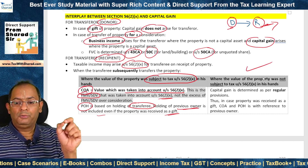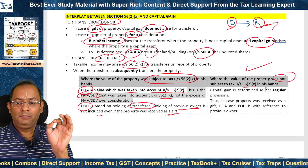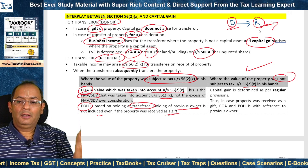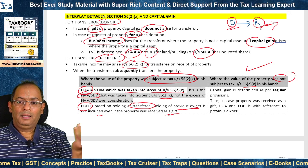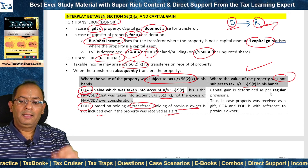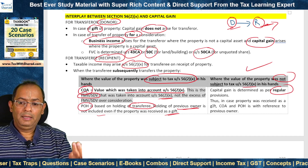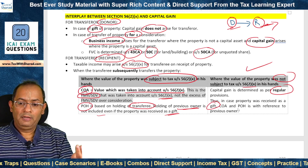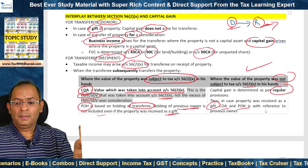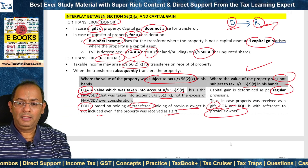Second situation: where the value of the property was not subject to tax under Section 56(2)(x) — for example, where D was the relative of R and therefore 56(2)(x) did not apply. In that case, capital gain is determined as per the regular provisions, and if it is a case of gift, cost of acquisition and period of holding will be determined with reference to the previous owner as normally done.